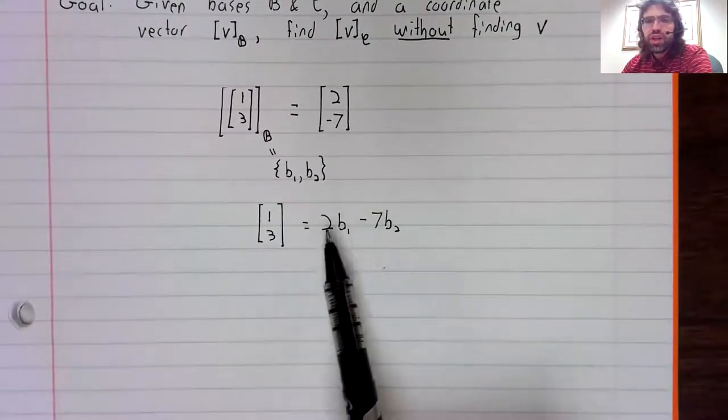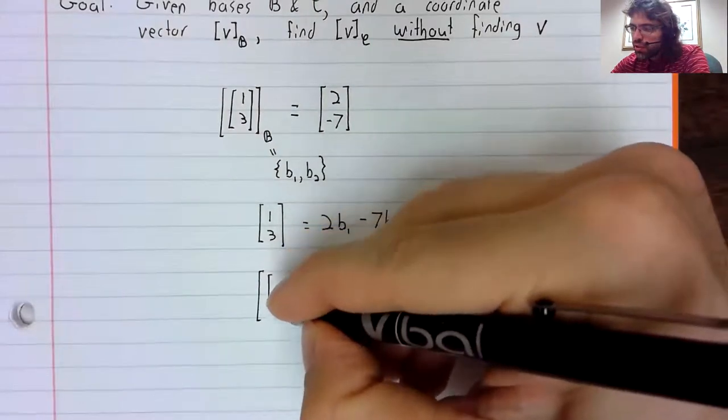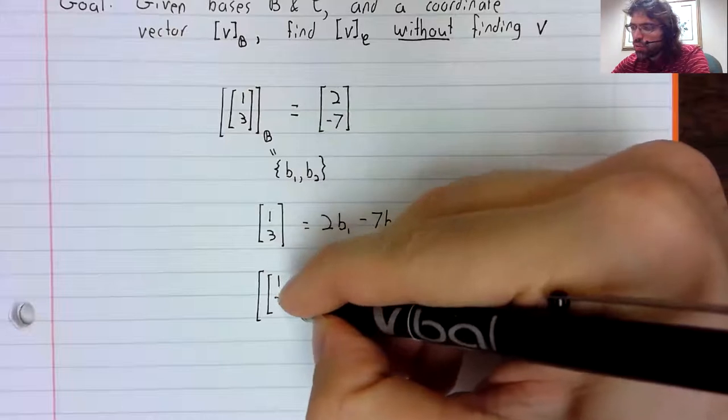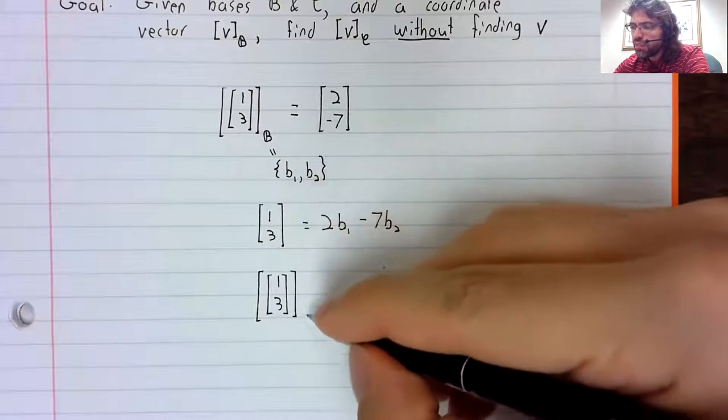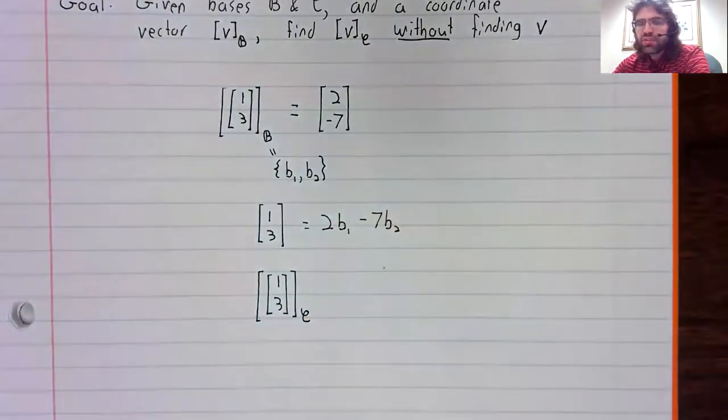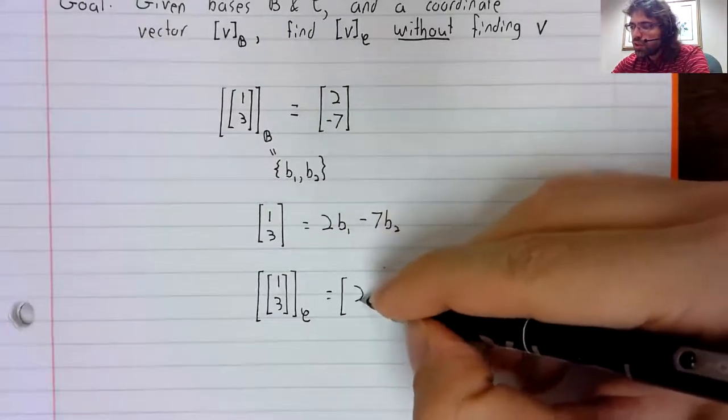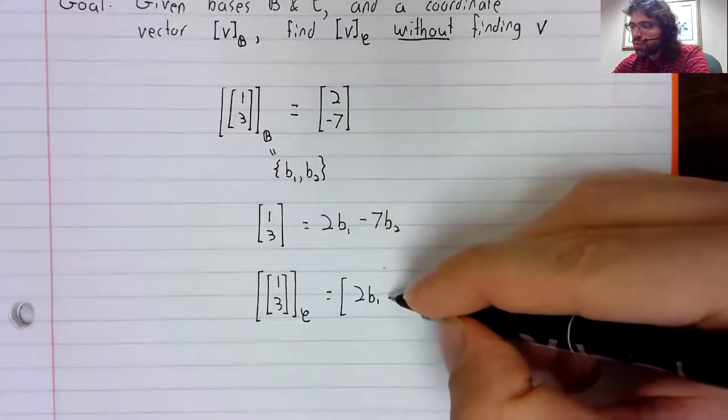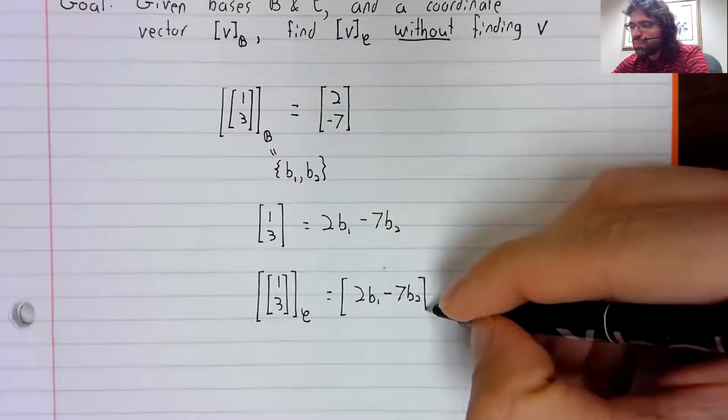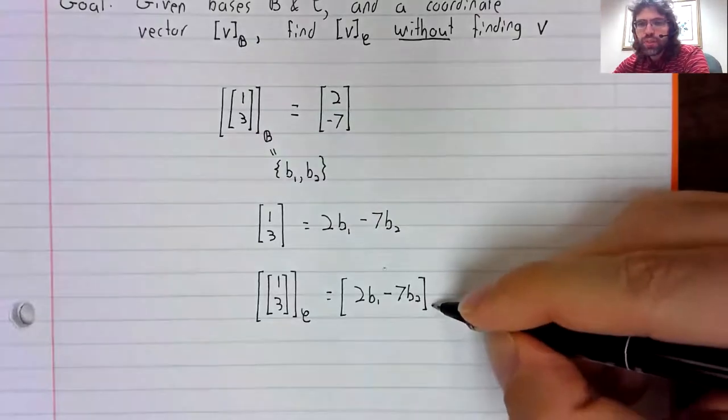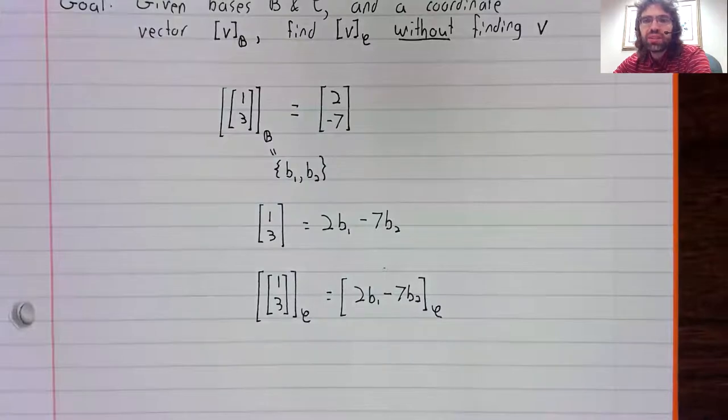Well, if this equality is true, then certainly the coordinate vector of [1, 3] with respect to the basis C is the coordinate vector of 2B1 minus 7B2 with respect to the basis C.